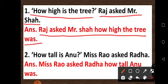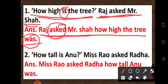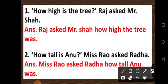While writing the answer in indirect speech, we remove the inverted commas and make the required changes. Raj asked Mr. Shah — this is taken at the beginning of the sentence. How high is the tree? But since the sentence is in past tense, this 'to be' verb form will also change into past tense. You will not write 'how high is the tree' — if you write like that it will be wrong. The correct answer is: Raj asked Mr. Shah how high the tree was.